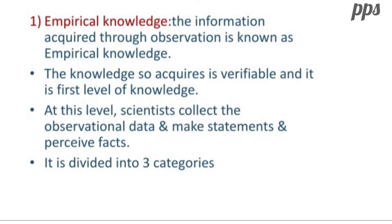Empirical knowledge. The information is acquired through observation and it is being verified, and it is known as the first level of knowledge. At this level, the scientists collect the observation data and make statements as well as participate in facts.